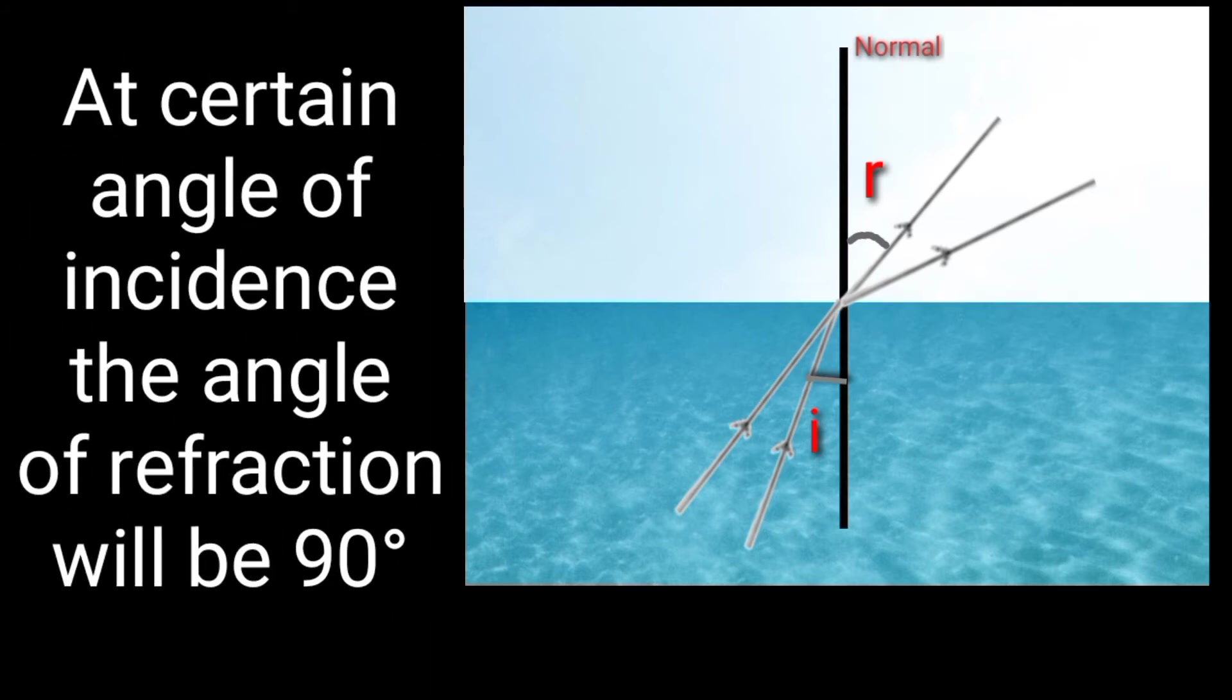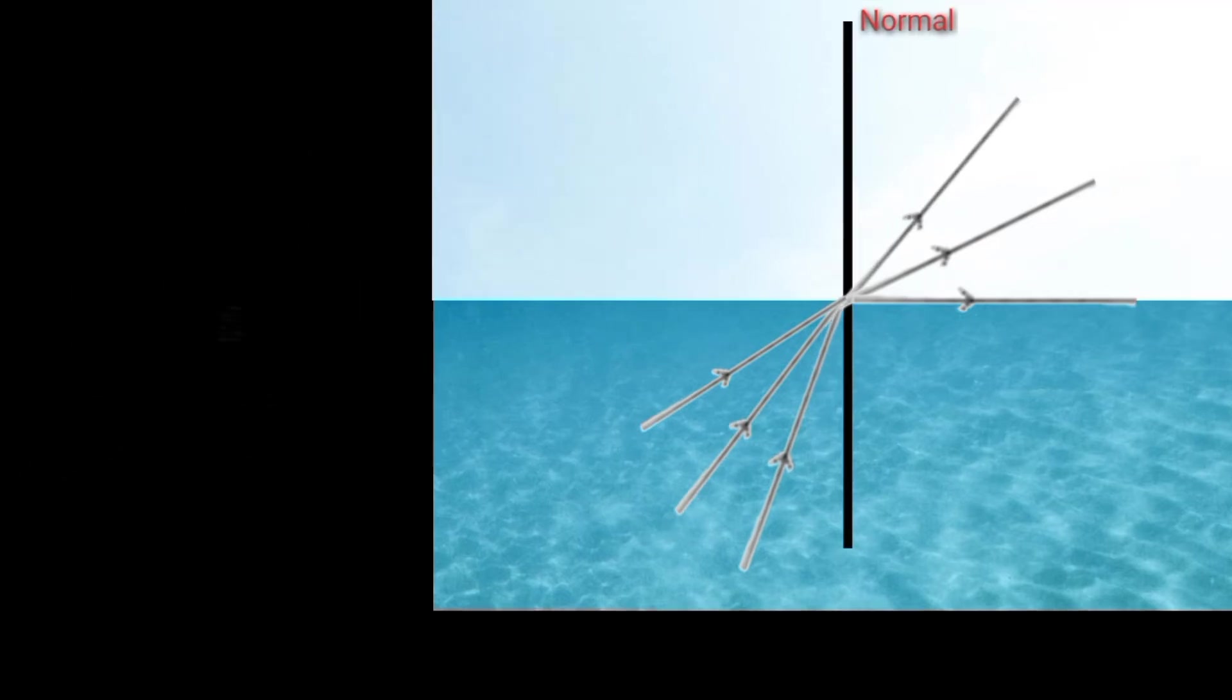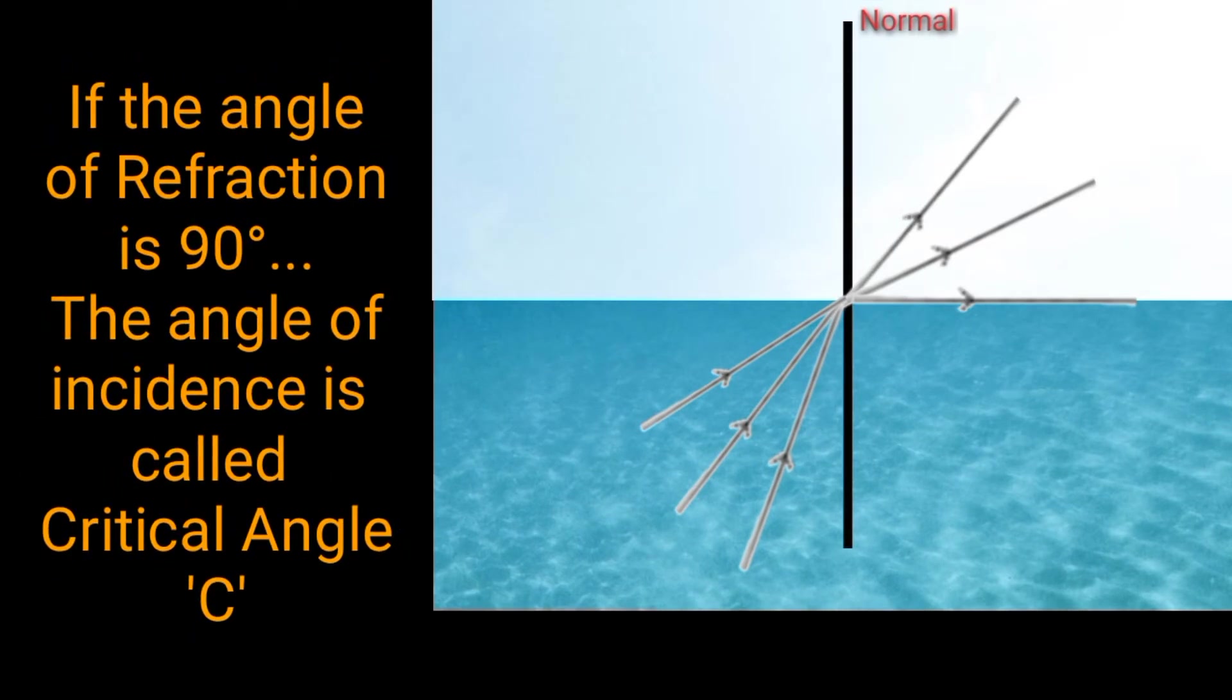For a certain angle of incidence, the refracted ray passes along the interface separating air and water, which means the angle of refraction is 90 degrees. Then this incident angle is called the critical angle.